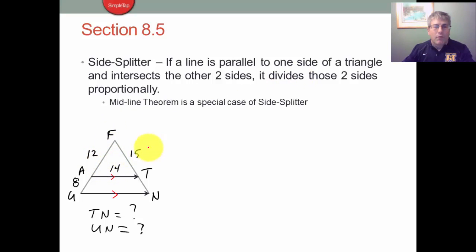So it's going to divide these two sides proportionally. We have that FA, the 12, is to the 8 as FT is to TN. So we'll have FA is to AU as FT is to TN.